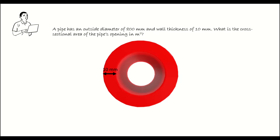We have two wall thicknesses — one on the left and one on the right. Using this information, we can determine what the inside diameter of the pipe is. 800 mm minus 10 mm minus 10 mm gives us an inside diameter of 780 mm.